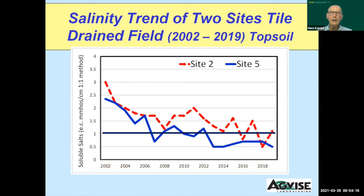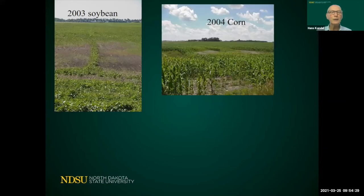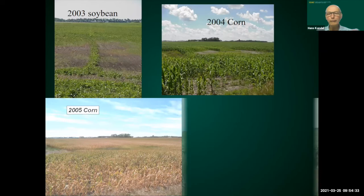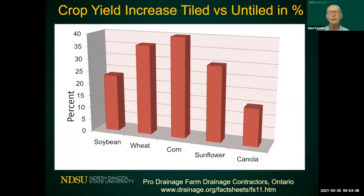Looking at sites two and five from 2002 to 2018, the graph bounces around but the critical level is one. It took a few years for the salt to push down, and then at a certain point the salt concentration is below one and you can expect yield increases. If you have salty areas, we can reduce salinity by removing that salt over time. Earlier there were still some crop issues in 2004, 2005, 2006, but by 2008 we had really recovered the ability of that ground to produce a crop.